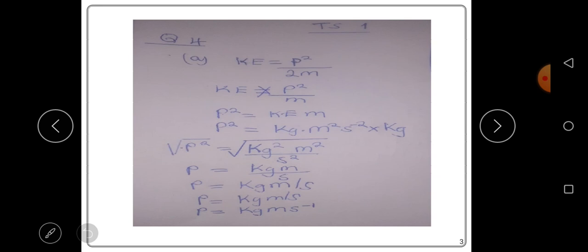So, from here, we substituted the units of kinetic energy with the units here, which are given in the equation. So, these are the units for kinetic energy, kg meter squared, second to the power negative 2, which is just the same as kg meter squared per second squared, multiplied by kg, which is the unit for mass.